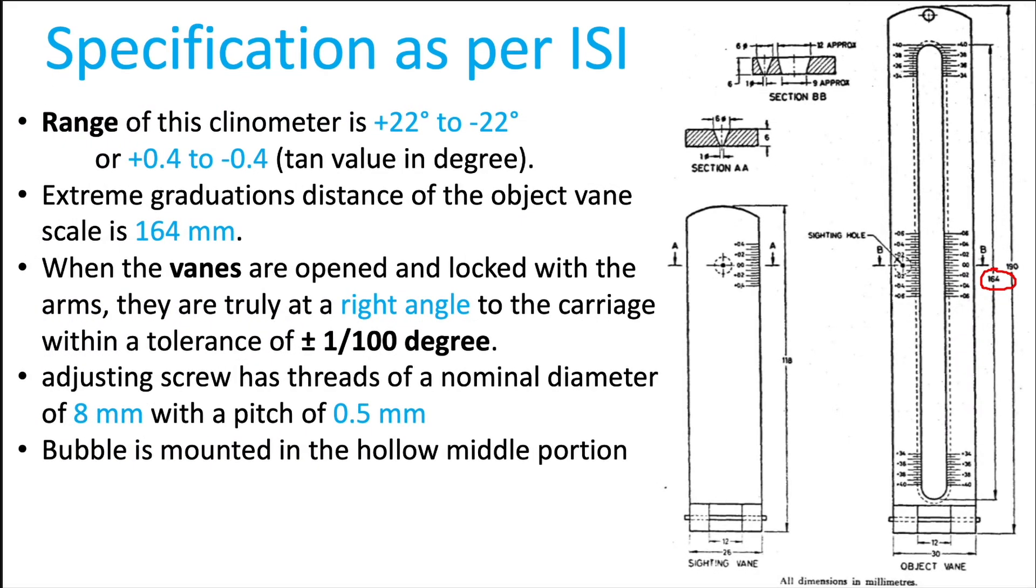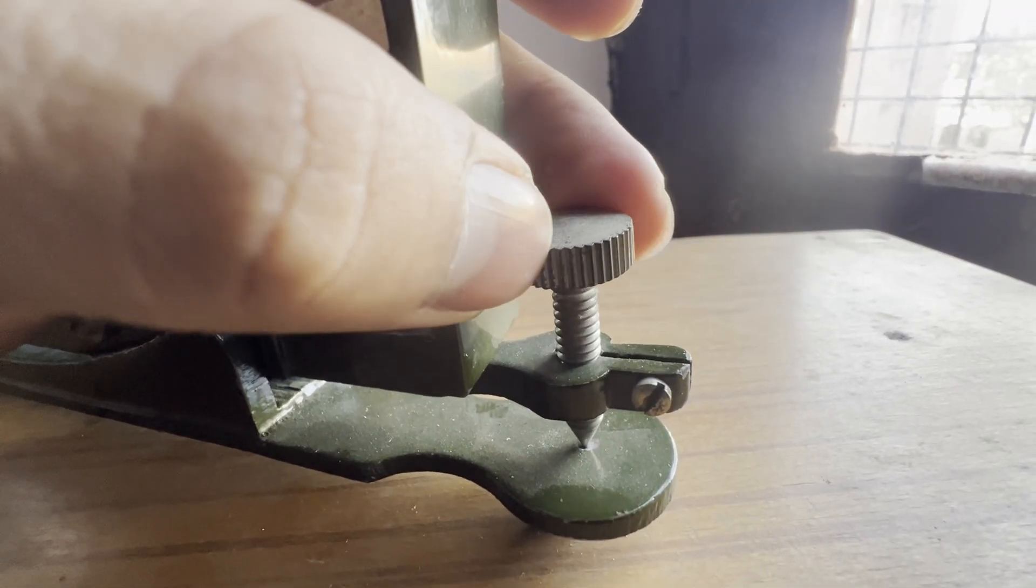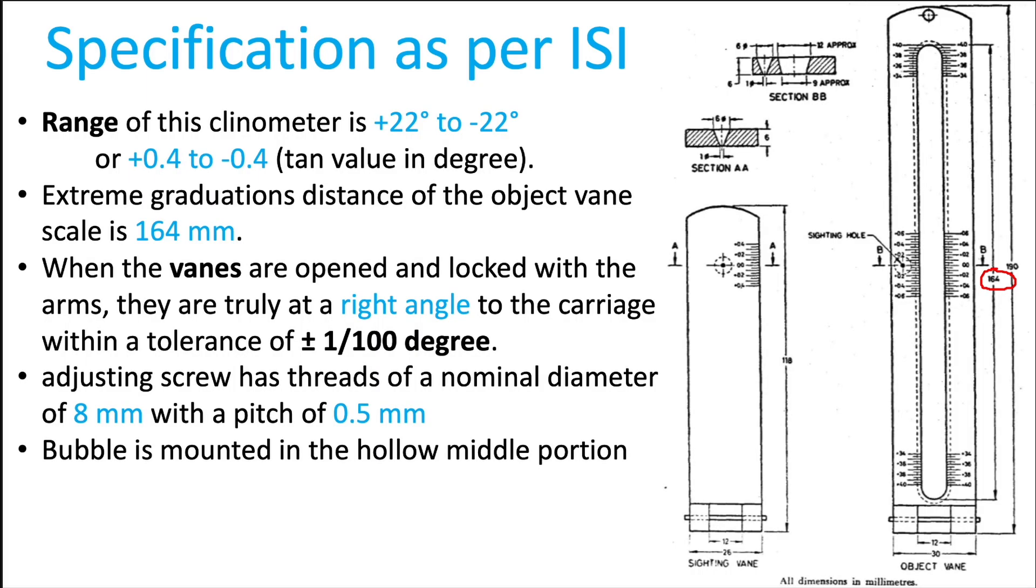When the object and eye vanes are fully open, they are at right angles with a tolerance of ±1/100 degrees. The leveling screw has a nominal diameter of 8 mm and a pitch of 0.5 mm.